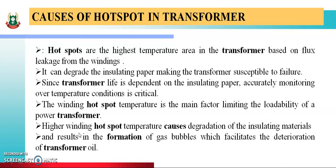Higher winding hot spot temperature causes the degradation of the insulating material — उसकी जो winding है वो भी degrade होना चालू हो जाएगी। And it results in the formation of gas bubbles, which facilitates the deterioration of the transformer oil। यह hot spot create होने के वज़े से उसमें gas bubbles create होगे, जिसके वज़े से transformer oil deteriorate होगा — मतलब खराब होगा। So, these are some causes of hot spot in the transformer.